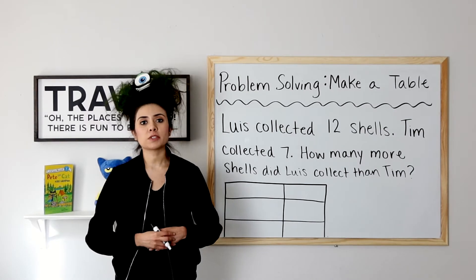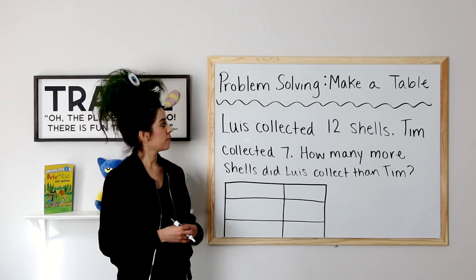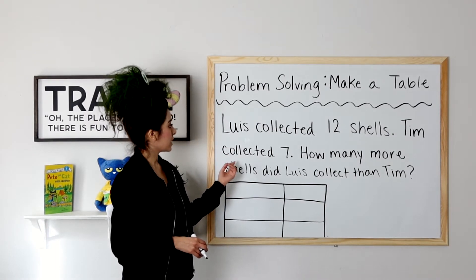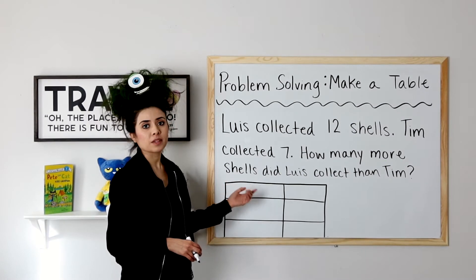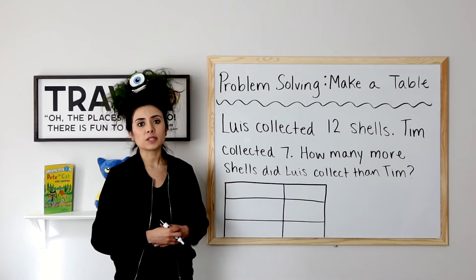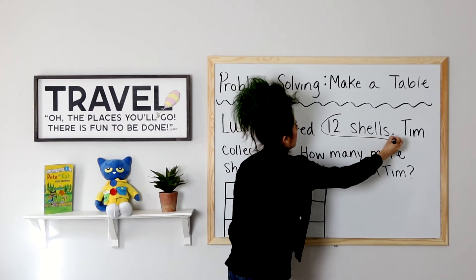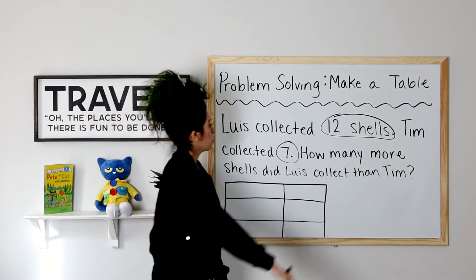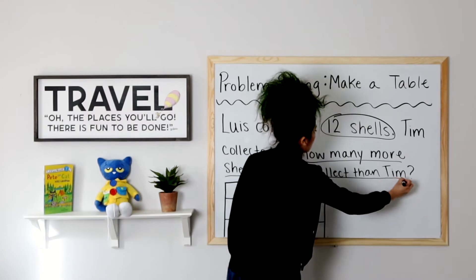Okay, let's go ahead and jump into our first word problem. Remember, the first step is to read the problem. Ready? Lewis collected twelve shells. Tim collected seven. How many more shells did Lewis collect than Tim? Second, we will circle what we already know. We know that Lewis collected how many shells? Twelve. Now we will underline what we want to find out. We want to know how many more shells did Lewis collect than Tim.